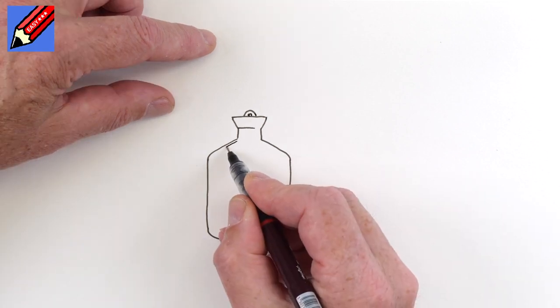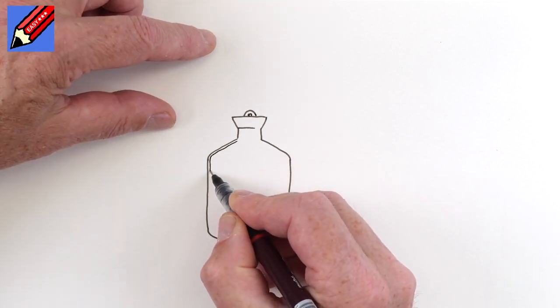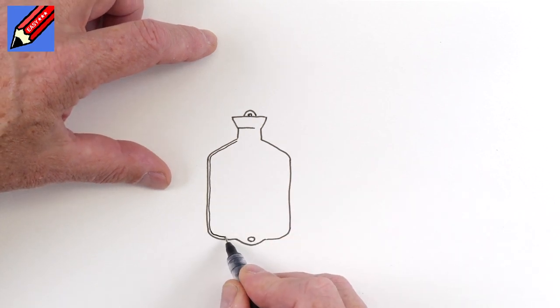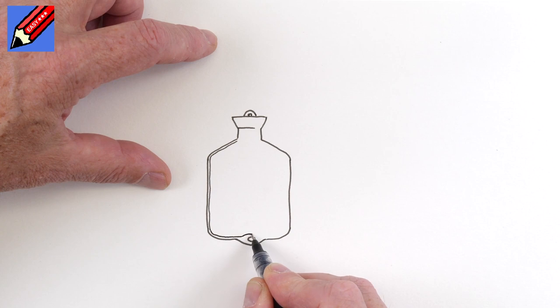And we want to go all the way around, really close to that edge line, like that. When you come here, that can just bump over that hole.